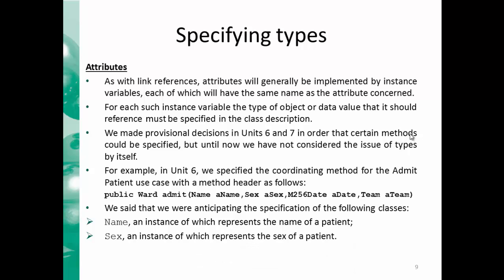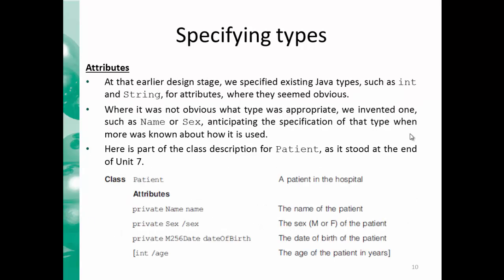In general, attributes are implemented by instance variables, either reference types or primitive types. If you take, for example, this coordinating method that appeared in unit 6 for the use case admit patient, you find it has name, sex, M256Date, and team. For example, if you take name, we say that name is an instance which represents the name of a patient. Now we can have it as a name type, and the programmer later can decide whether this name type can be implemented by, for example, string, or in case string is not enough for name, find a different way to implement it.